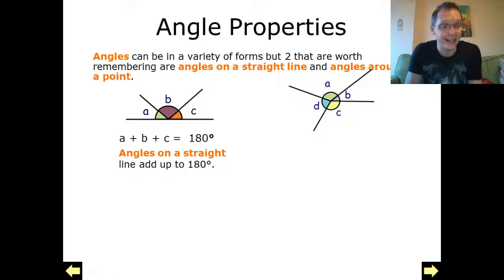So straight line angles, 180 degrees. It's worth knowing because we could actually use this if we're trying to prove an angle is what we're saying it is.